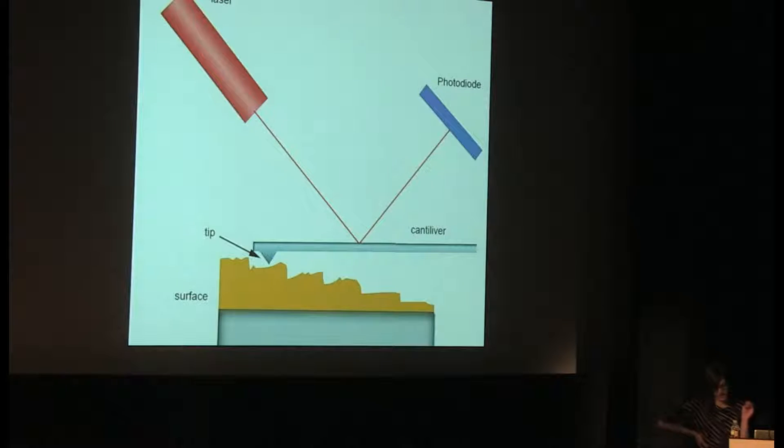So as a tiny cantilever, and the tip is less than 10 nanometers wide, is displaced, this piezoelectric crystal converts the nanomechanical motion into voltage, which then creates this map of the surface.